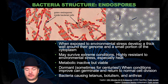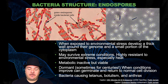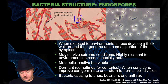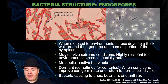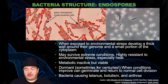Some bacteria can also form endospores. If a bacteria is exposed to environmental stress — such as not enough food or lack of water — it will develop a thick wall around its genome and a small portion of the cytoplasm. You can see in this figure the endospore forming inside the cell. This allows them to survive extreme conditions; they're highly resistant to environmental stress, especially heat. These cells become metabolically inactive but remain viable, staying dormant sometimes for centuries, and when conditions improve they germinate and return to normal cell division.